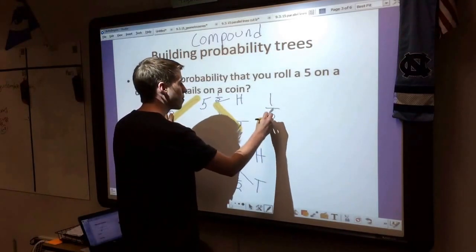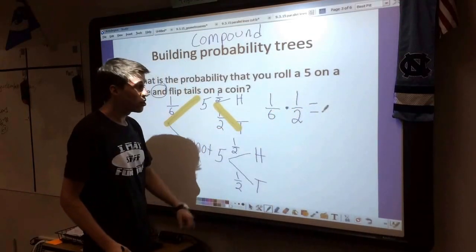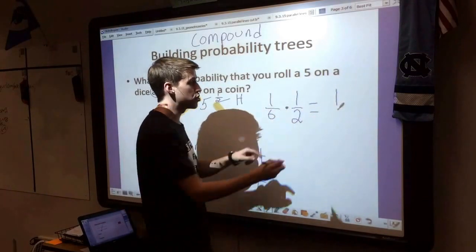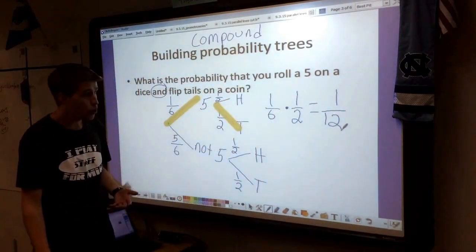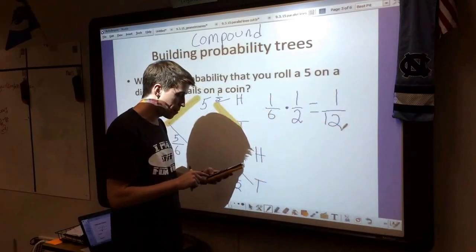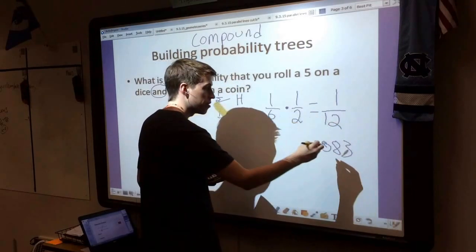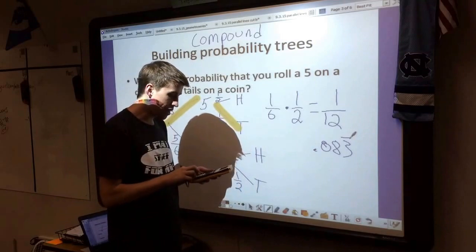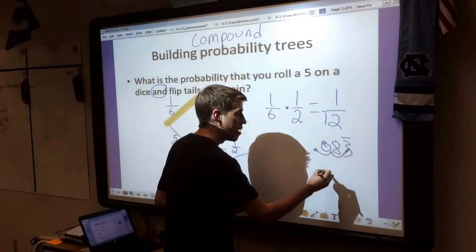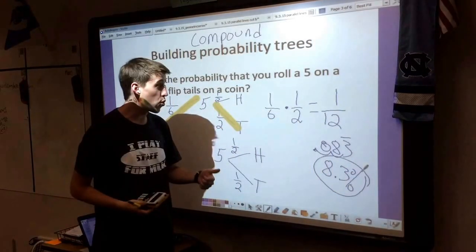So I'm going to take 1/6 and multiply it times 1/2. When we multiply fractions, we do the numerator times the numerator, the denominator times the denominator. 1 times 1 is 1, 6 times 2 is 12. Now usually when we talk about probability, we need to turn this into a decimal or percent. So I'm going to take 1 divided by 12, and I'm going to get 0.083 repeating. The shortcut for decimal to percent is move your decimal over twice. We end up with an 8.3% chance that you will both roll a 5 and then flip tails on a coin.